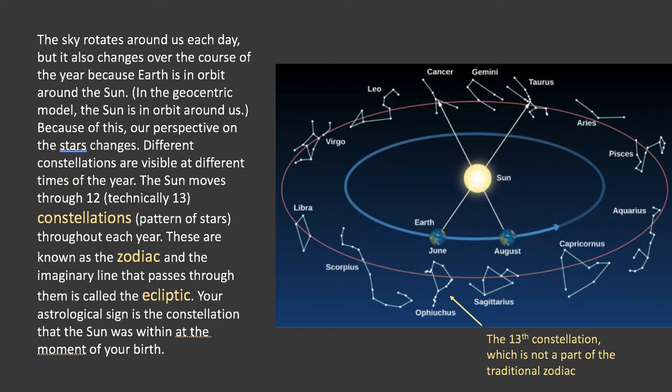Now it doesn't just change over a day. It also changes over the course of the year because the Earth is in orbit around the sun. Or if you prefer the geocentric perspective, the sun is moving around us. Because of this, our perspective on the stars changes. Different constellations become visible. Different constellations become not visible anymore. And over the course of the year, the sun passes through or passes in front of 12 different constellations. Technically there's 13. Just quickly, there's a 13th constellation here. It's not part of the traditional zodiac and so we usually don't talk about it. But there are 13 constellations that the sun will pass in front of over the course of a year. But usually what happens is Scorpius and Sagittarius are given a little bit of extra space and Ophiuchus is sort of wedged out.